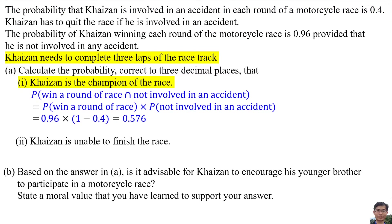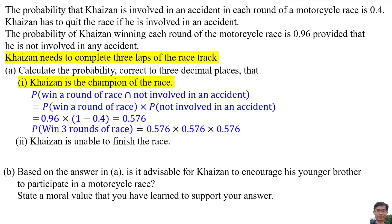Kaizan needs to complete 3 laps of the race track, so he must win 3 rounds of the race. Therefore, the probability is 0.576 times 0.576 times 0.576, which equals 0.191.